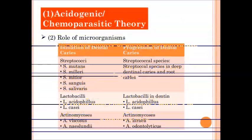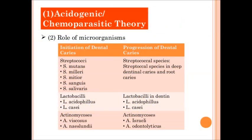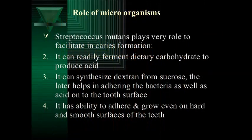Regarding the role of microorganisms, it is uniformly agreed that caries cannot occur without microorganisms. Several organisms have been found capable of inducing caries lesions. A wide variety of organisms are able to initiate pit and fissure caries. A limited number of organisms have proved to colonize smooth surface caries, in which Streptococcus mutans is very significant. Streptococcus mutans plays a very important role in facilitating caries formation. It can readily ferment dietary carbohydrates to produce lactic acid. It can synthesize dextran from sucrose, which helps in adhering the bacteria as well as acid on the tooth surface. It also has the ability to adhere and grow even on hard and smooth surfaces of teeth.